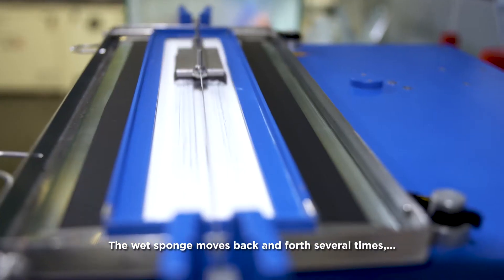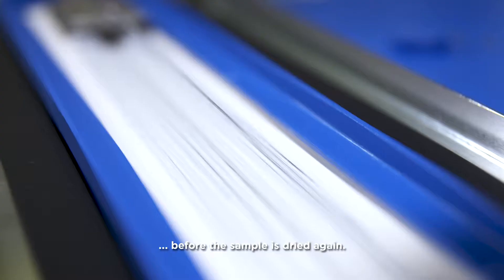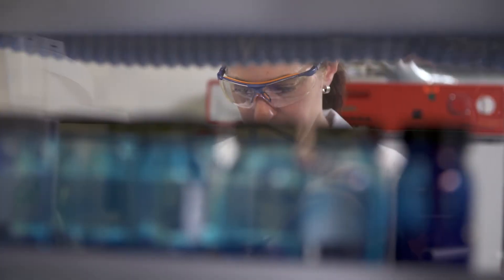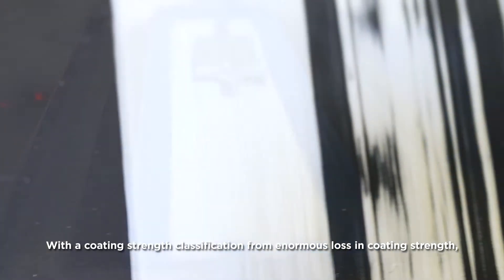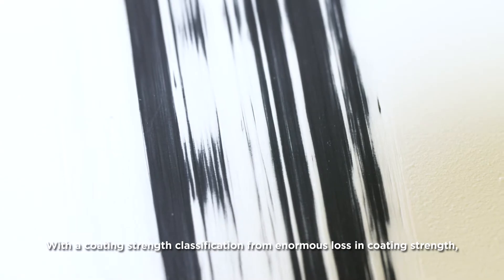The wet sponge moves back and forth several times before the sample is dried again. Finally, the samples are analyzed with a coating strength classification from enormous loss in coating strength to marginal loss.